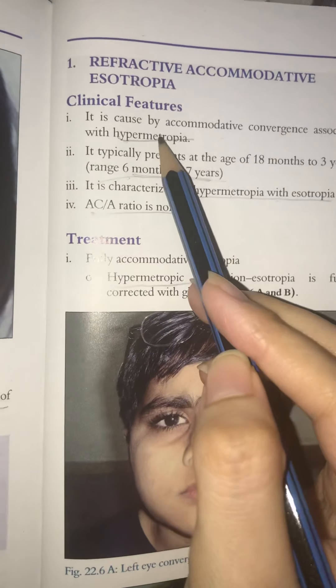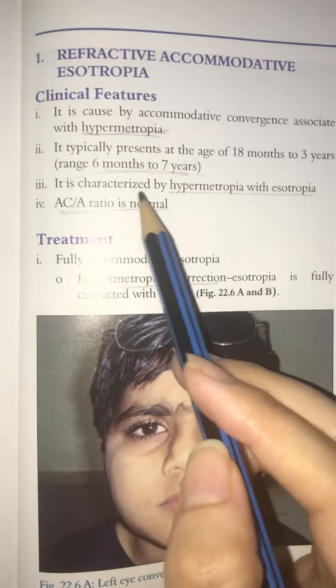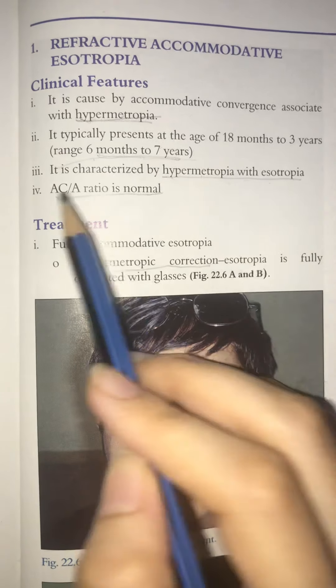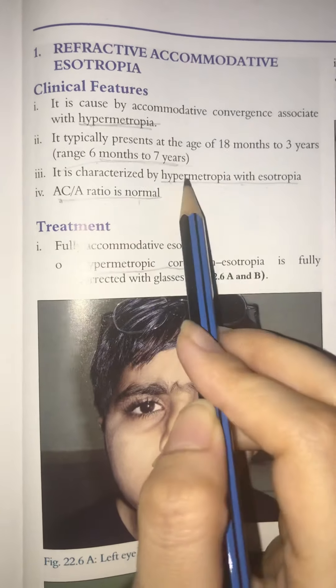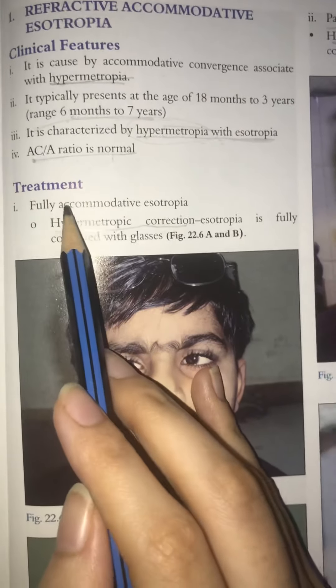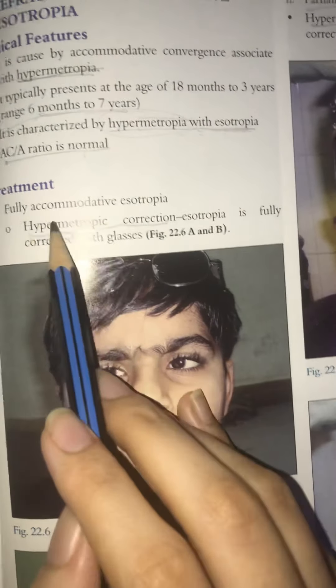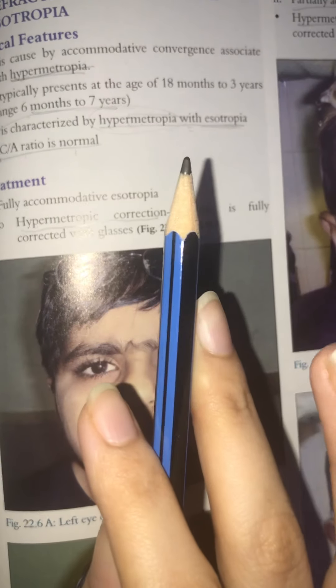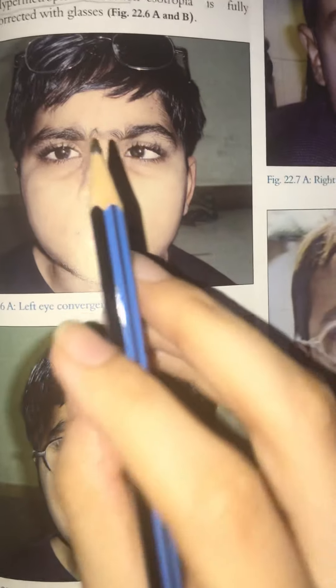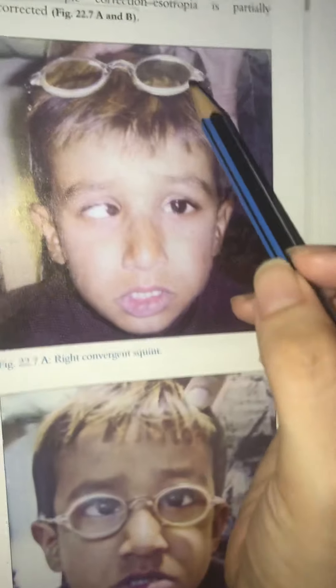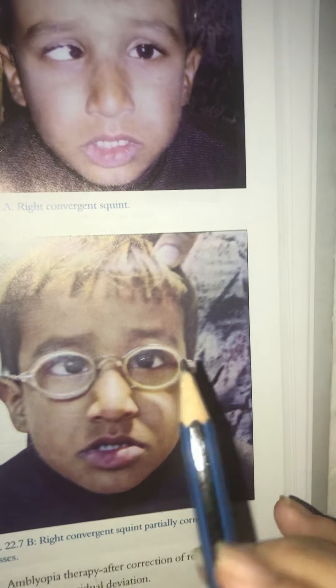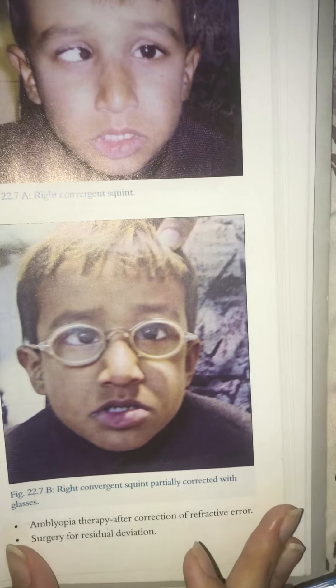Accommodative esotropia is further classified into refractive, non-refractive, and partially accommodative types. In the refractive type, hypermetropia causes the squint, the AC/A ratio is normal, and full correction with glasses resolves the esotropia completely. In partially accommodative esotropia, glasses only partially correct the squint.